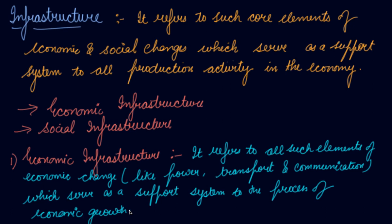A support system is essential to the process of growth. Abundant availability of power supply would accelerate the pace of production activity, and an abundance of means of transportation would facilitate the movement of goods and services more easily. So all these help in economic growth.